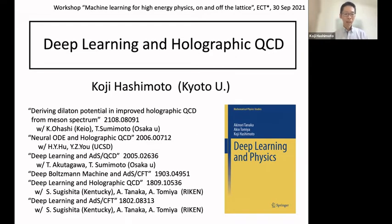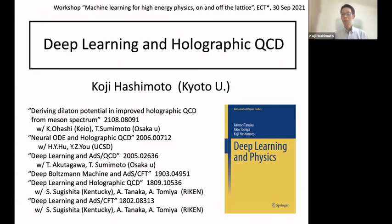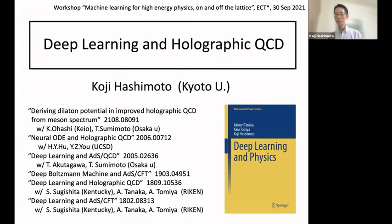He acknowledges many collaborators, starting with Tanaka-san, Tomiya-san, and Tsugishita-san, with the project beginning four years ago and continuing to the present. Very recently, he published a paper with Ohashi-san and Sumimoto-san to find the complete gravity dual Lagrangian supposed to be dual to QCD, and he's happy to share what was found using deep learning.